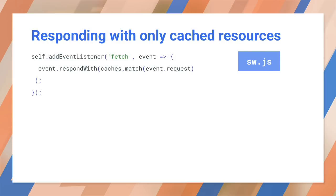Lighthouse reported that our app has a service worker, but it doesn't work offline — let's fix that. We have the files in the cache and now we want to get them out. Remember that the service worker sits between our site and the network. The service worker can intercept requests to the network and divert them into the cache. When this happens, the service worker receives a fetch event, so we need to add a fetch event handler to the service worker.